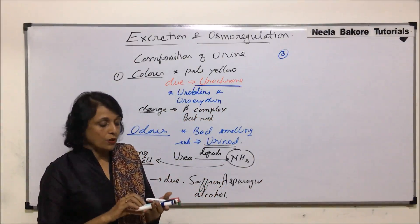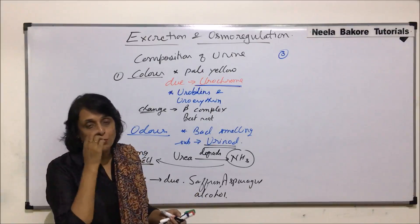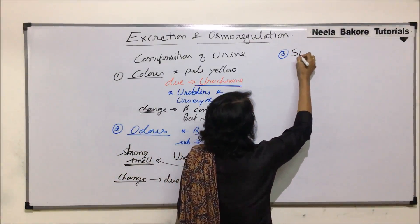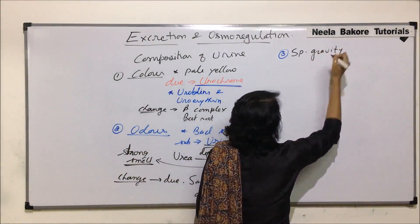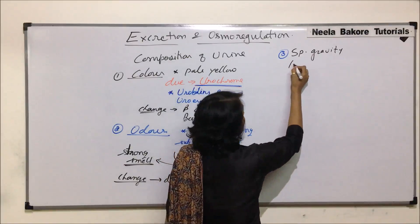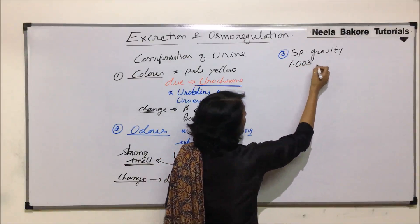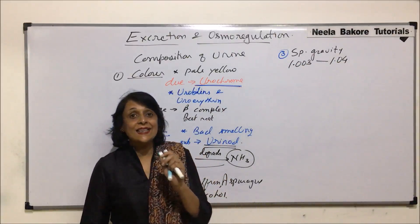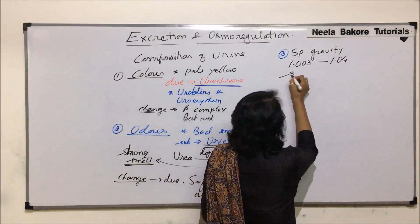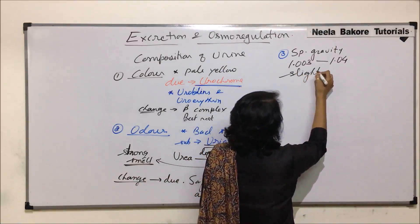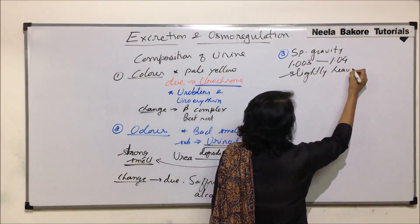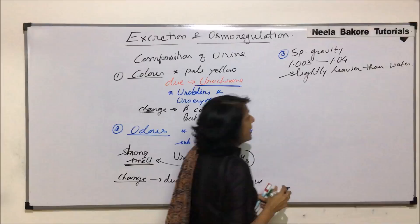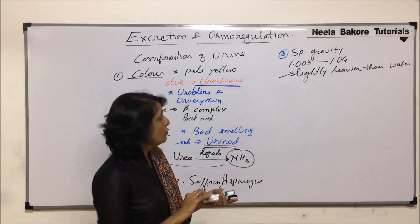The third property to understand is specific gravity. The specific gravity of urine is 1.003 to 1.04 — that means it is slightly heavier than water. This is again one physical property of urine.